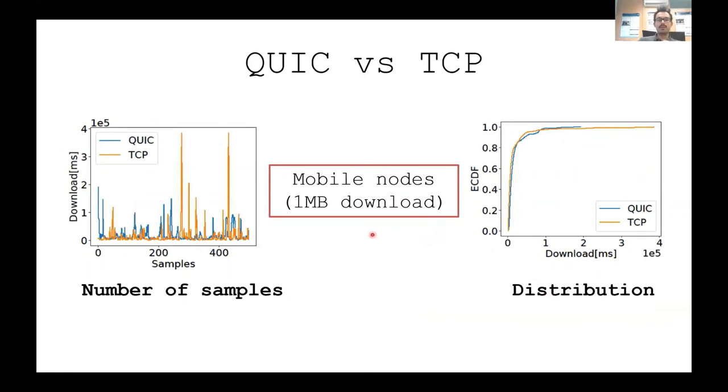So let's take a look at how QUIC and TCP behave in mobile network. So this is the case of a mobile node, the same thing, one megabyte download, and we have here the distribution of the eCDF of the download time between QUIC and TCP. We can see here, there is really not that big of a difference between QUIC and TCP. However, QUIC tends to saturate at 20,000 milliseconds, better than TCP around 40,000, which is the double. But if we look at the number of samples in the time series, we can see that TCP shows high peaks, and instead QUIC shows more of a stable trend in terms of download time.